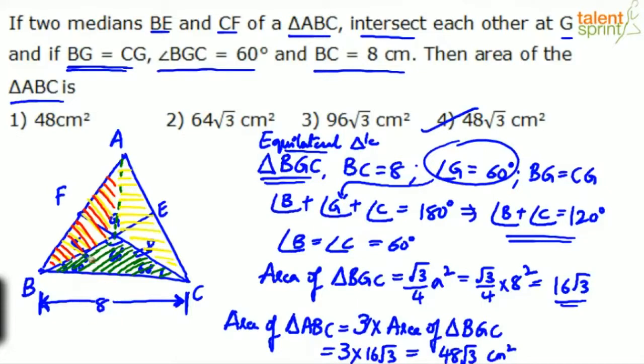Area will be root 3 by 4 A square. Once you get this area, you know it's going to be three times. So you don't need to write all the steps. Strictly speaking, you don't have to write the formula in the exam. You won't get extra marks for this. Just say 16 into 3 root 3, so 48 root 3 - option 4 would be the answer.